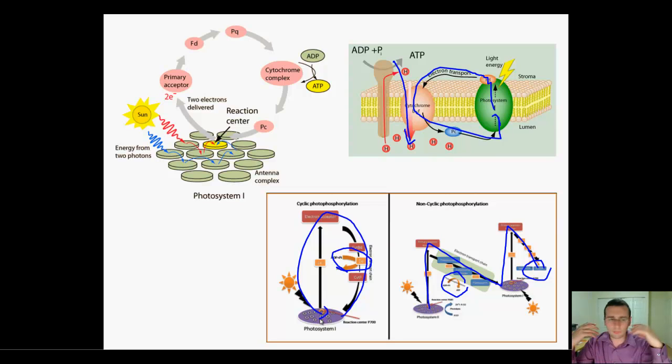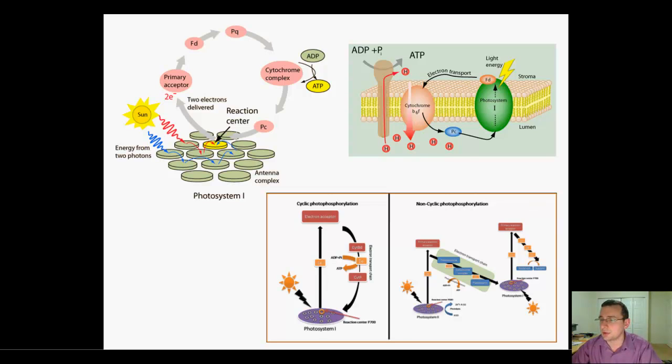The electrons are circling in a cyclic process that produces ATP through pumping but does not produce NADPH. The key thing is this only involves photosystem 1, which is the P700 system, rich in chlorophyll A. It does not produce NADPH.